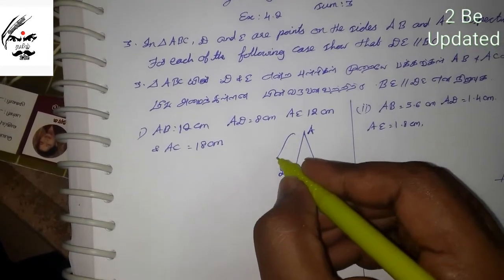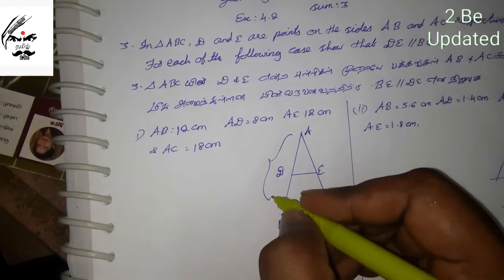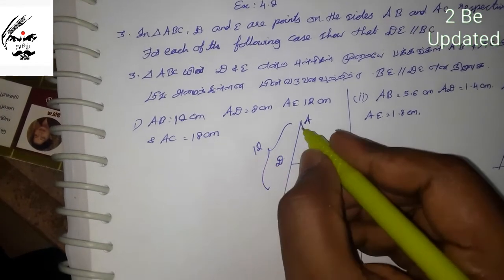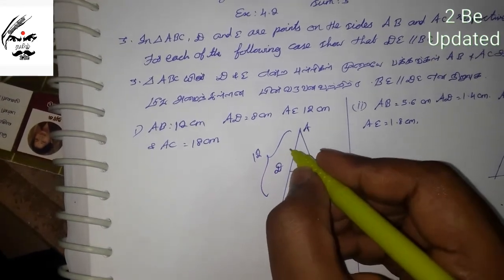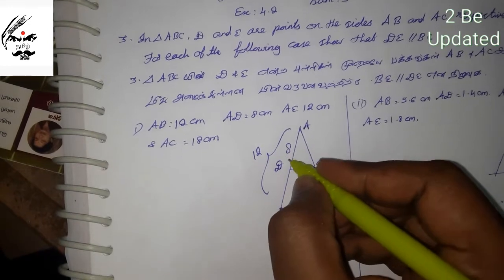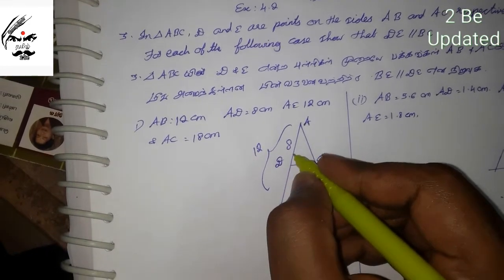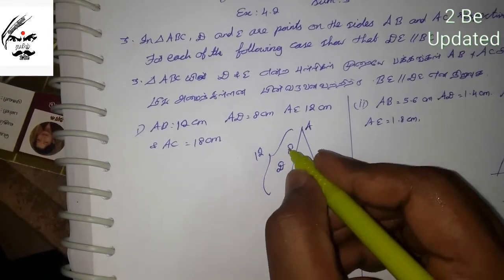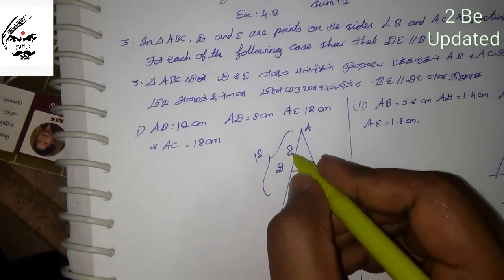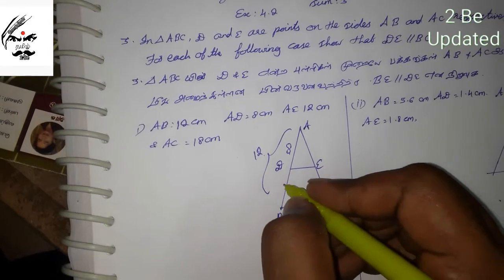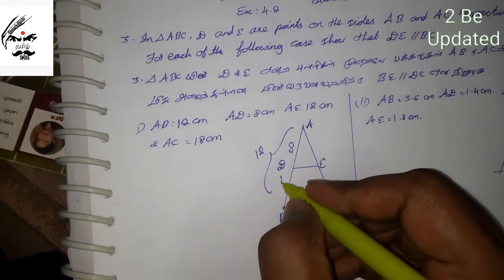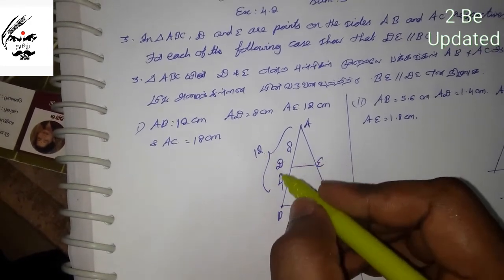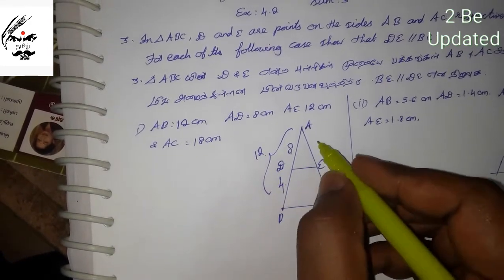AB is 18. So AD is 8cm. So the whole AB is 18. This whole is 18. 8 plus 4 is 12.